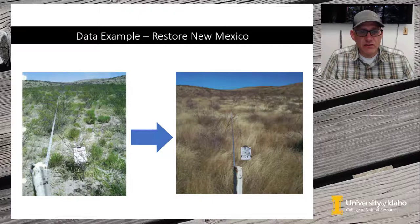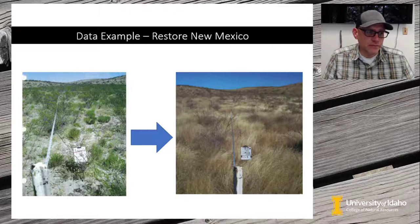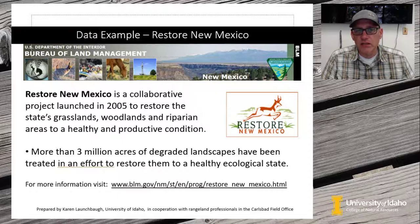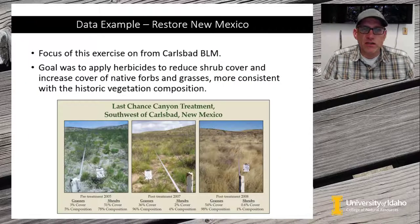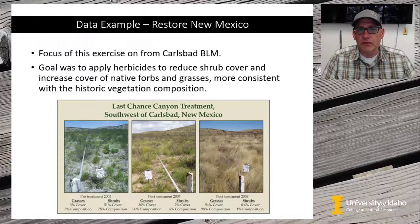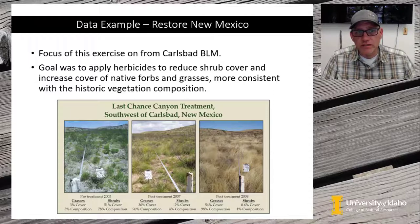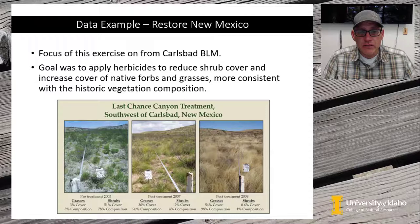We're going to practice these Excel skills for class with some data collected by the Bureau of Land Management for their Restore New Mexico project. Restore New Mexico is a collaborative project launched by the BLM in 2005 to restore the state's grasslands, woodlands, and riparian areas. To date, more than 3 million acres of landscapes have been treated to help restore them to a healthy ecological state. For this exercise, we'll use data collected by the Carlsbad Field Office of the BLM, whose goal was to apply herbicides to reduce shrub cover and increase the cover of native forbs and grasses. We'll look at pre-treatment and post-treatment data and do some rough comparisons between those.